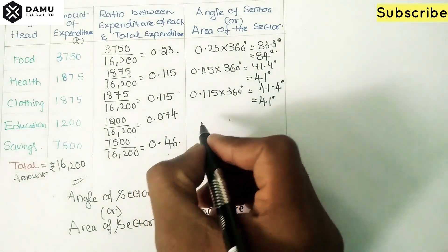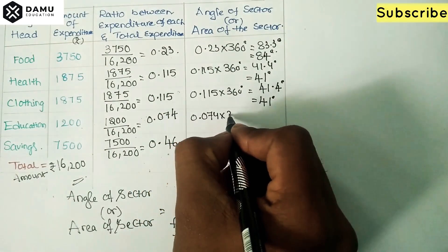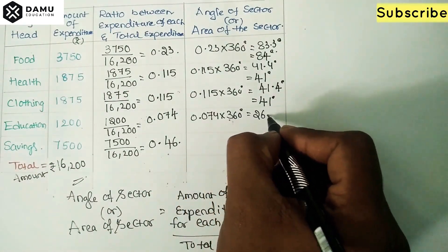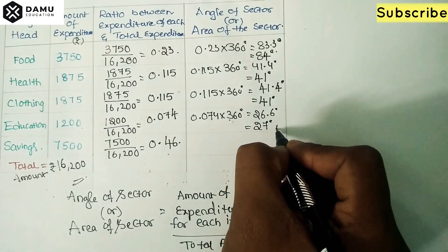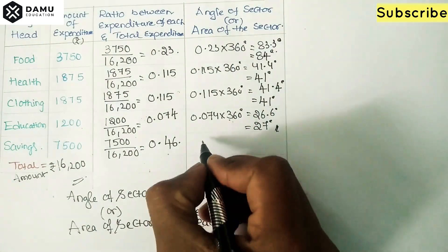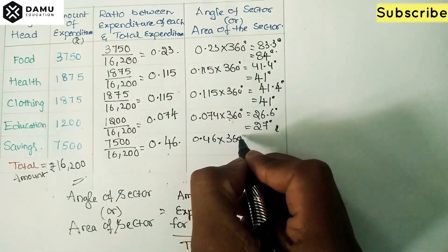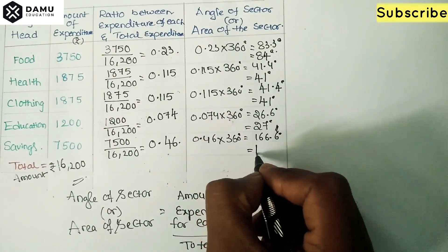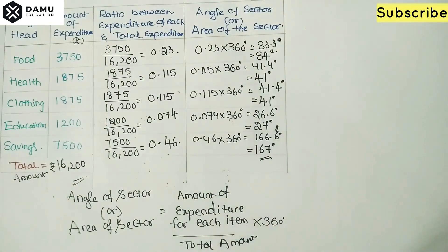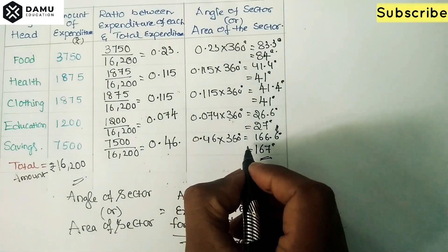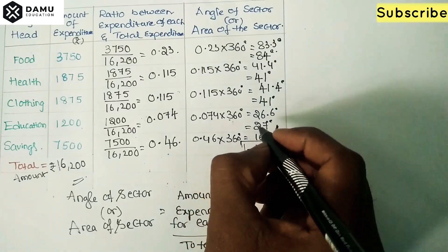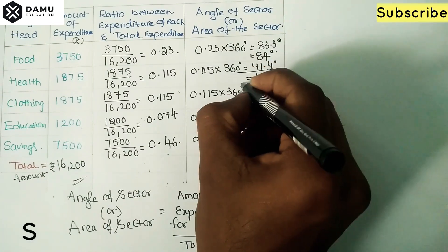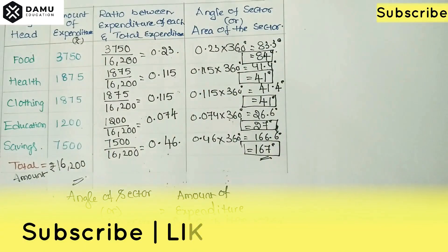For education: 0.074 × 360 = approximately 26.6 degrees, taken as 27 degrees. For savings: 0.46 × 360 = approximately 166.6 degrees, taken as 167 degrees. So our approximate angles are: savings 167°, education 27°, clothing 41°, health 41°, food 84°.